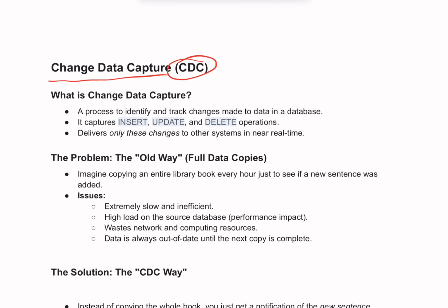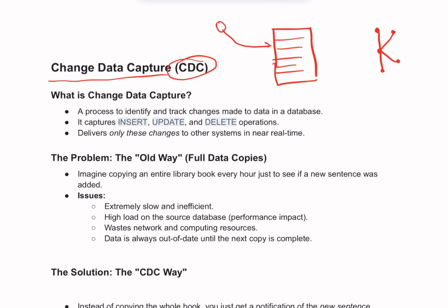For example, it can deliver changes to a Kafka topic. So let's assume this is our database and this is our Kafka topic where I am going to stream all the data that is being updated every second. For every second there is a new record that is being added or updated in the database.